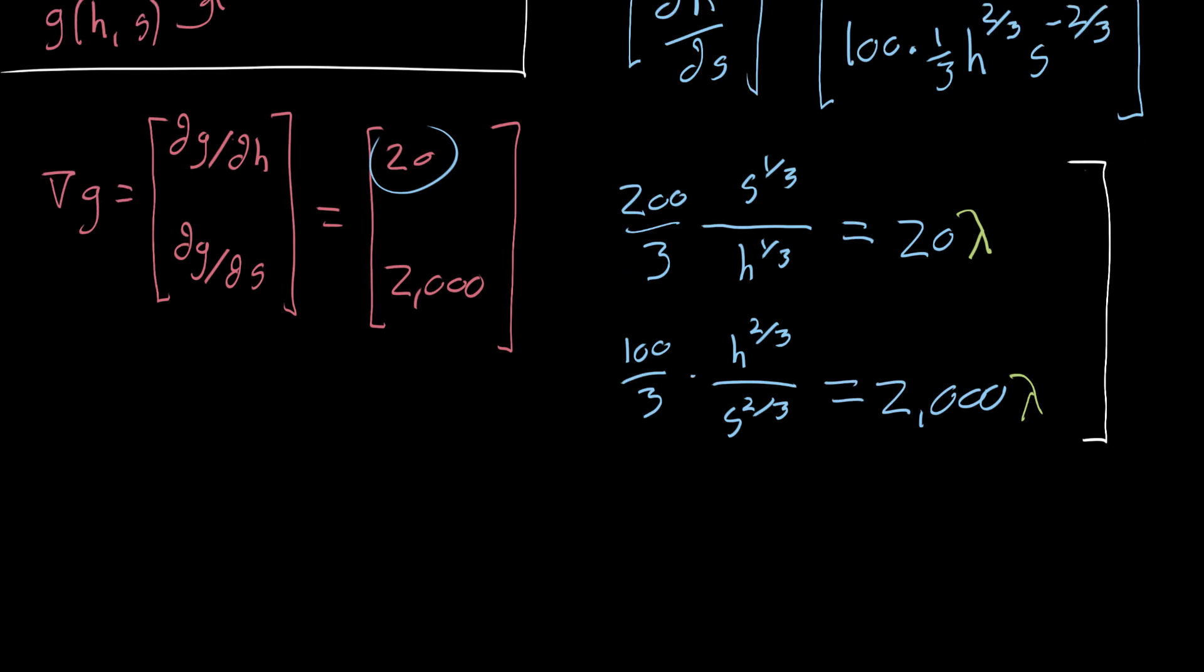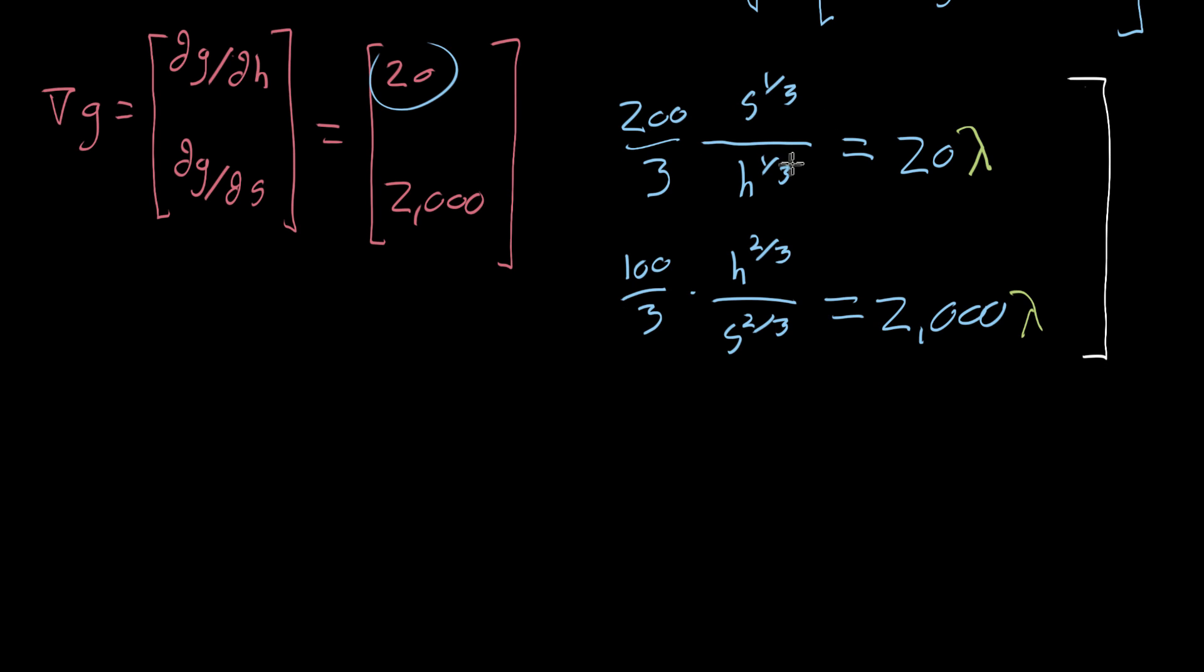So as kind of a first pass here, I'm gonna do a little more simplifying, but I'm gonna make a substitution that'll make this easier for us. So I see S over H here, and they're both to the same power. So I feel it might be a little bit easier if I just substitute U in for S divided by H. And what that'll let me do is rewrite this first equation here as 200 thirds, 200 thirds times U to the power one third, and that's equal to 20 times lambda.